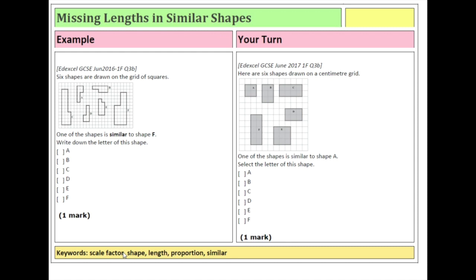One of shapes A to E is going to be similar to shape F, meaning all of its sides will still be in the same proportions as they are in shape F. Looking at F, the wide part is taller than the narrow part. So I'm only looking at shapes that have a longer wider part than a narrow part. Shapes A, C and D all have a wide base that is actually shorter than the narrow part at the top, so they're not going to be in the same proportion as shape F.